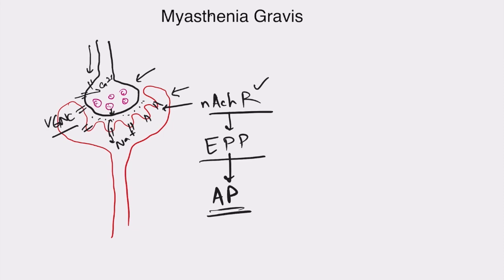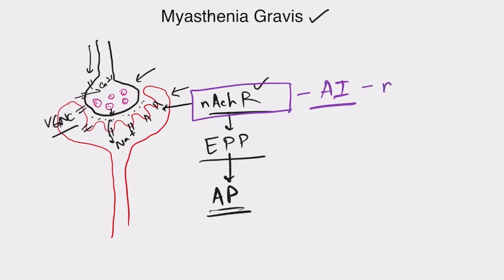Those are the basic steps of neuromuscular transmission. Now there are certain diseases which affect this transmission, and the most important of those diseases is myasthenia gravis. Myasthenia gravis is a condition in which there is destruction of the nicotinic acetylcholine receptors. It is an autoimmune disease where there is production of nAChR antibodies, and these antibodies can act in various ways — they can destroy these receptors.